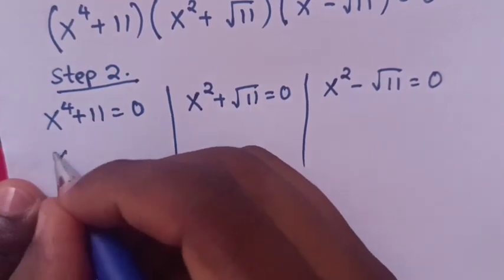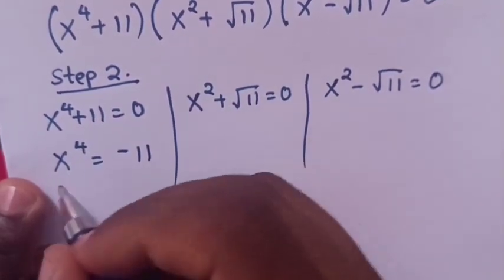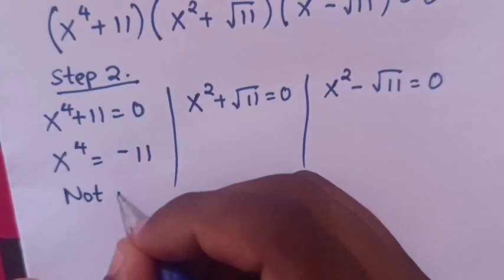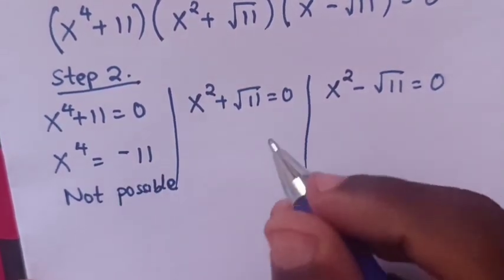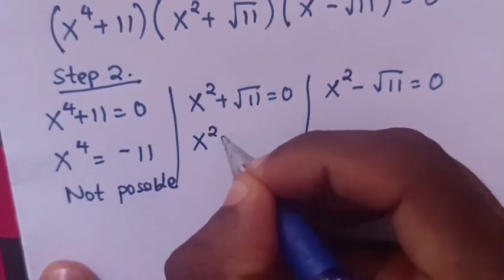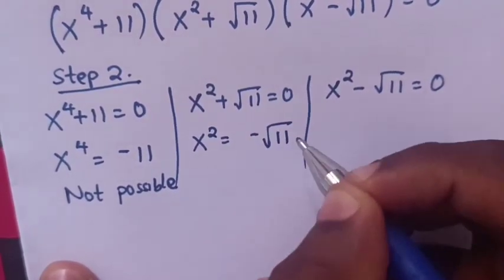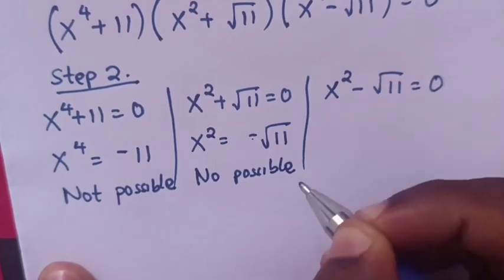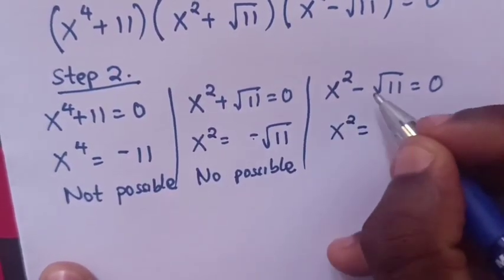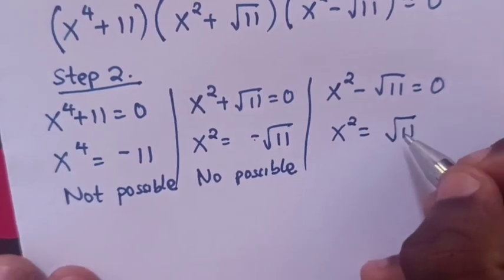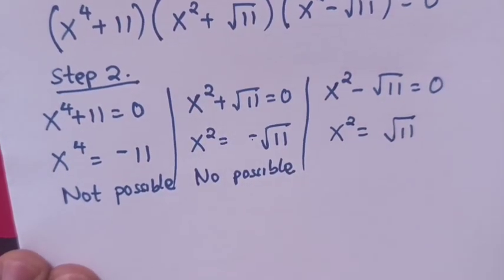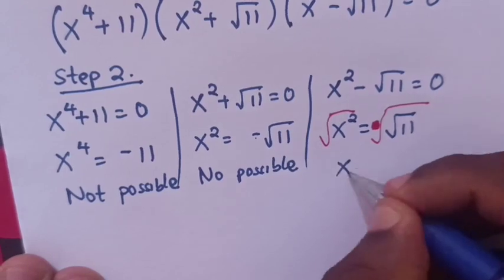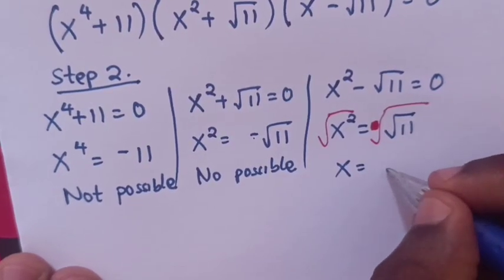From the first equation, x power 4 equals negative 11. The 4th root of a negative number is imaginary, so this is not possible. From x squared equals negative square root of 11, taking the square root of both sides also gives an imaginary number, so not possible. From x squared equals square root of 11, this is possible, so x equals the square root of the square root of 11.